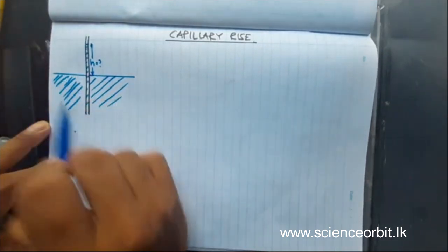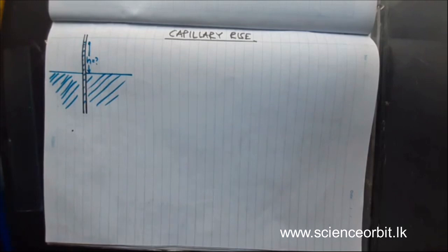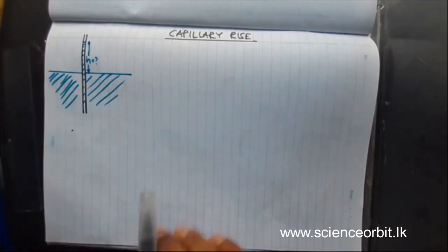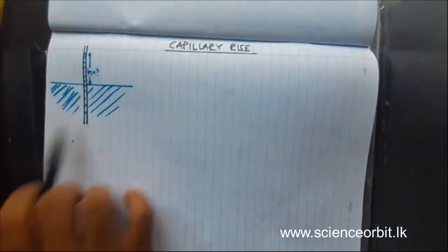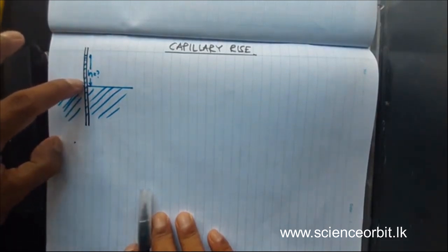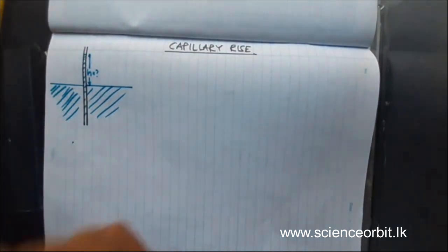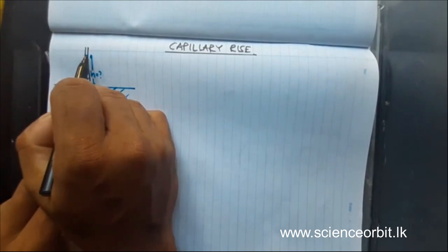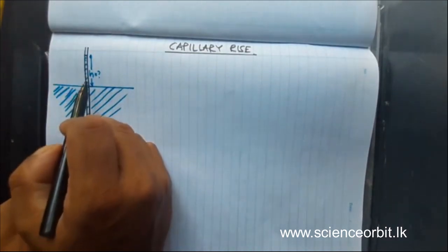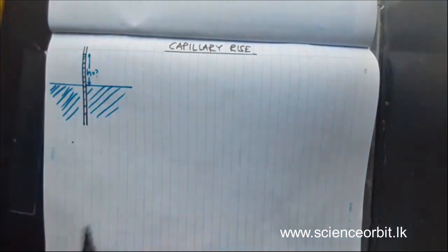We are going to talk about this height h and derive equations for it. This does not happen noticeably in wider tubes — the rise h will be very small, maybe one or two millimeters. But if the tube is very narrow, it will be noticeable. The reason for capillary rise is surface tension — there is an adhesive force between glass and water, and because of that, liquid particles in contact with glass tend to rise up. The other particles in the middle also move up due to cohesive forces.